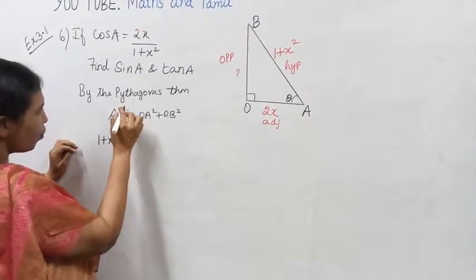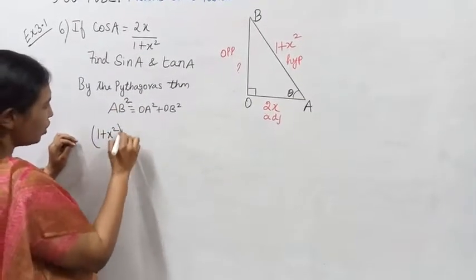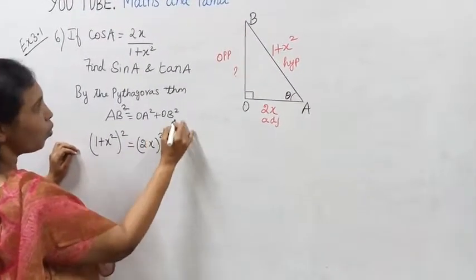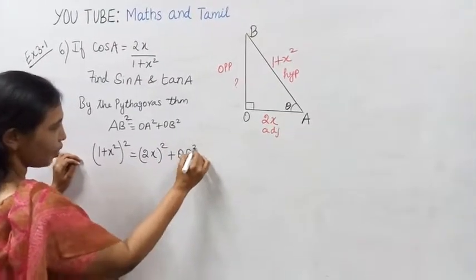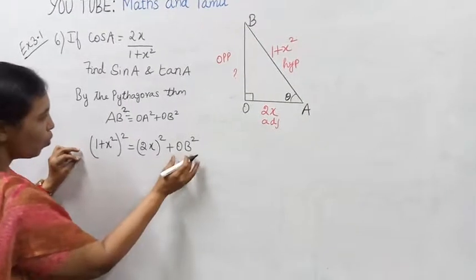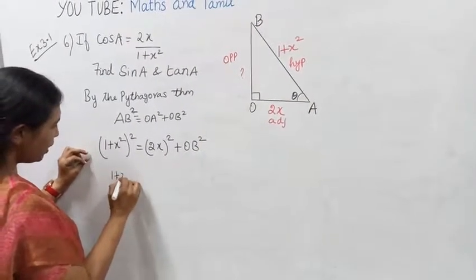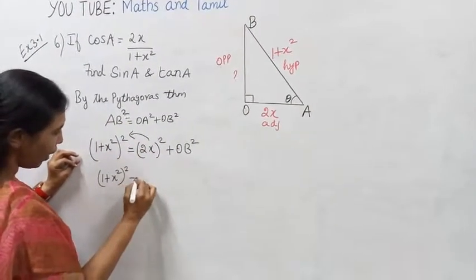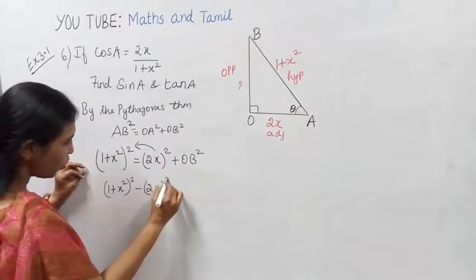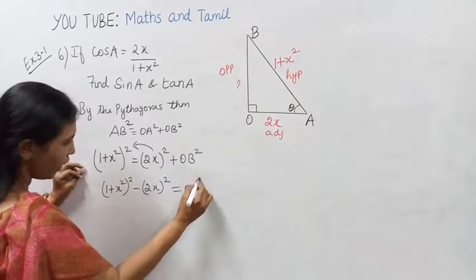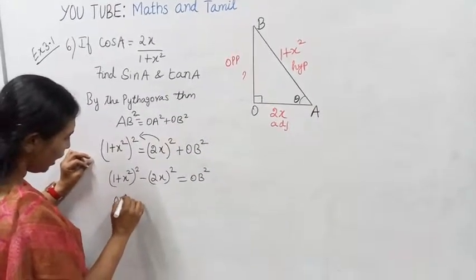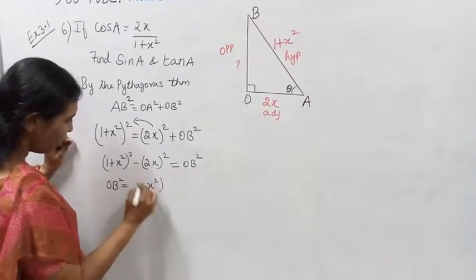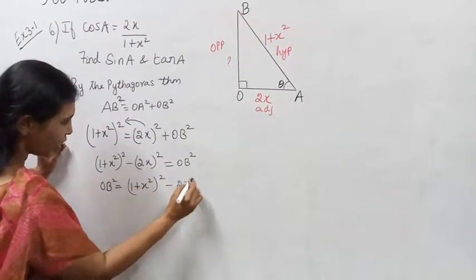AB equals the square root of (1 plus x squared). OB squared equals AB squared minus OA squared, which is (1 plus x squared) squared minus (2x) squared. This is the left-hand side minus the right-hand side.